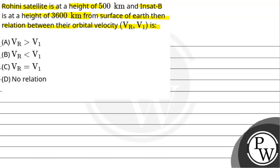For Rohini satellite, the height HR is 500 km and for Insat satellite, HI is equal to 3600 km from the surface of Earth.